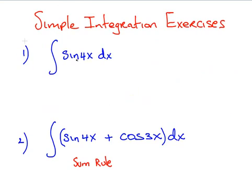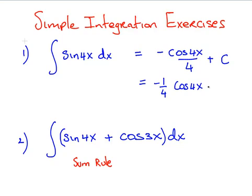So, in this case, sin of 4x dx, this is straightforward enough. So, the answer to that one is minus cos(4x) over 4 plus c. Or you can write it as minus a quarter cos(4x) plus c. That's the answer to the first one there.